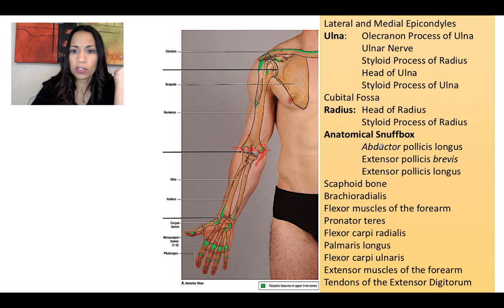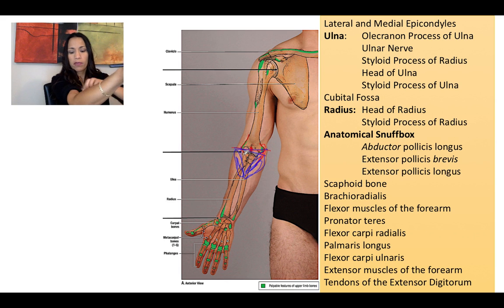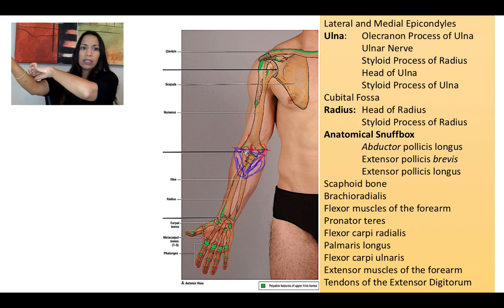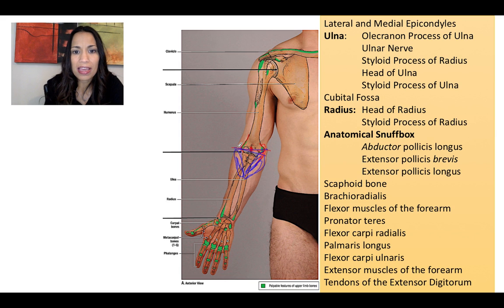There is a cubital fossa formed by a horizontal line passing through both epicondyles — the lateral and the medial epicondyle. The medial border is the pronator teres and the lateral border is the brachioradialis. To feel the brachioradialis, flex the forearm — that's its function — and you'll feel this muscle. To feel the pronator teres, grab the medial side of your forearm and perform pronation. That depression anteriorly between those two muscles, with the imaginary line superiorly, is the antecubital or cubital fossa.